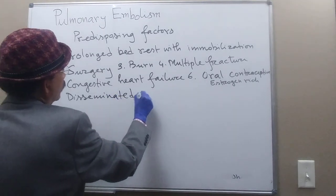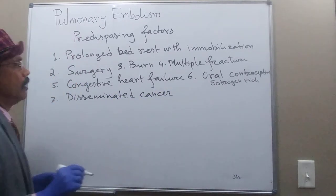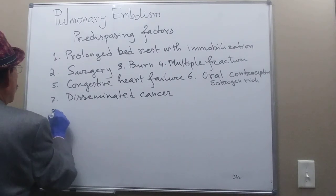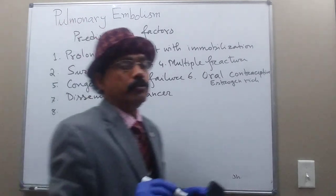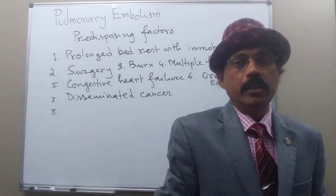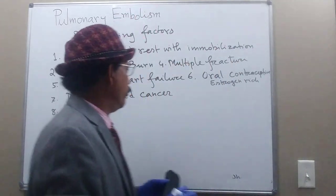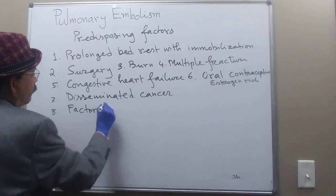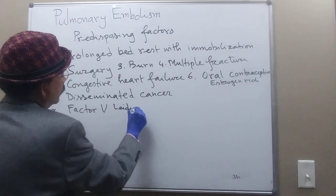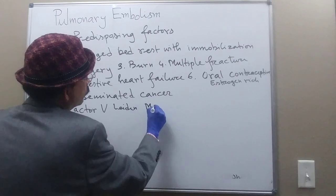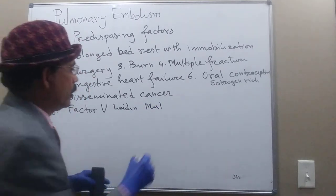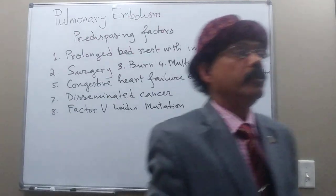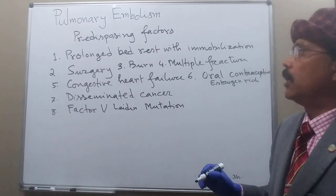Disseminated cancer may also lead to pulmonary embolism. We also have blood coagulation disorders like Factor V Leiden mutation, which causes blood clotting problems. These are the predisposing factors for pulmonary embolism.